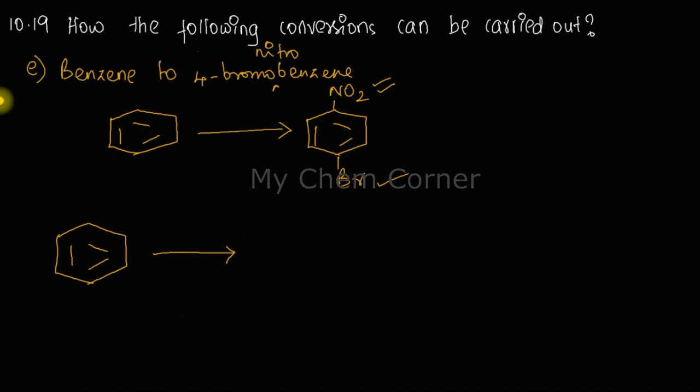Once you get BR, since BR is an ortho-para directing group, at the para position you can get the nitro group. But in reverse, when you do nitro group, it's a meta directing group. In that case you will not get a 4-bromo.